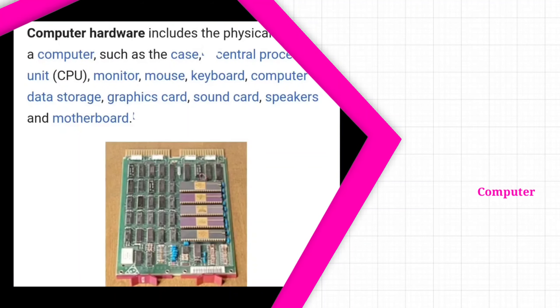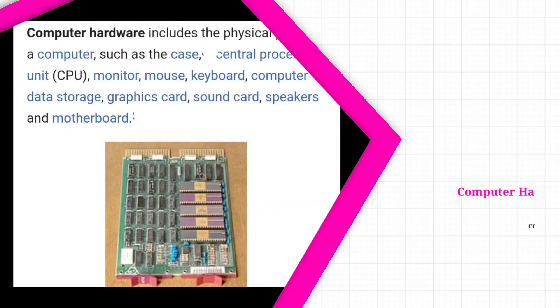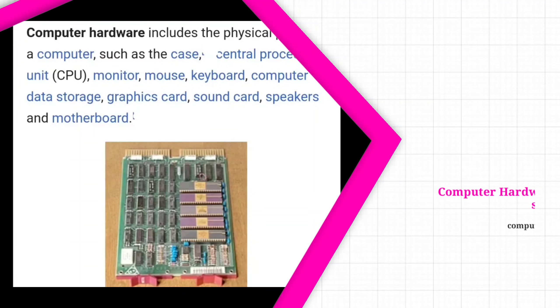When we talk about hardware, we are talking about the physical components and physical parts of a computer — the electronic, magnetic, and mechanical parts of a computer.